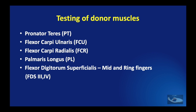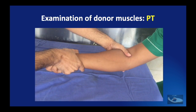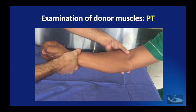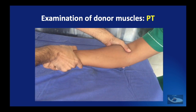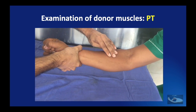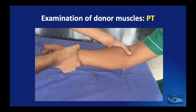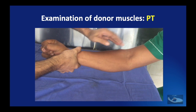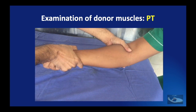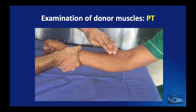In examination of radial nerve palsy, we also need to test the donor muscles in case we need to do a tendon transfer. The commonly used donor muscles are the pronator teres, the flexor carpi ulnaris, flexor carpi radialis, the palmaris longus, and the flexor digitorum superficialis of the middle and ring fingers. For testing the pronator teres, the patient is seated, one hand of the examiner supports the elbow and the other holds the wrist and forearm in full supination. The patient is asked to forcefully pronate the forearm against resistance, and the pronator teres can be palpated under the lateral aspect of the proximal half of the forearm.